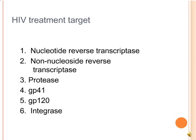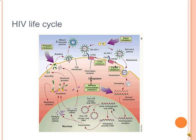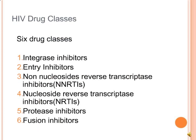I will now talk about HIV treatment targets. There are six targets, including four enzymes and two glycoproteins. The four enzymes are nucleotide reverse transcriptase, non-nucleotide reverse transcriptase, protease, and integrase. The two glycoproteins are GP41 and GP120. Here is a picture of the HIV life cycle demonstrating the six targets: blocking the entry, the fusion of the virus into the host's cytoplasm, integrase inhibition, replication inhibition, and budding inhibition.